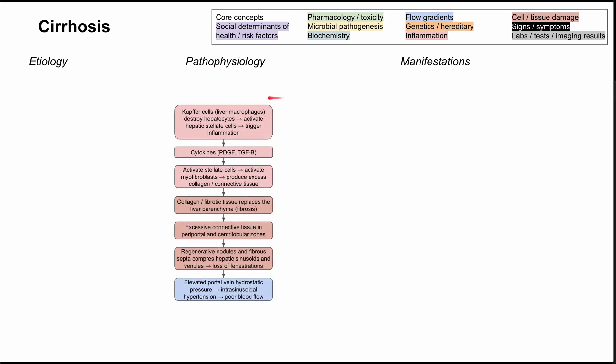In general, the pathophysiology is that cirrhosis is caused by inflammation in the liver that leads to scar tissue in the liver, and that eventually affects your blood flow, which damages the normal functioning of the liver. First, you have Kupffer cells — these are liver macrophages that destroy hepatocytes. This destruction of hepatocytes activates hepatic stellate cells, which then trigger more downstream inflammation.